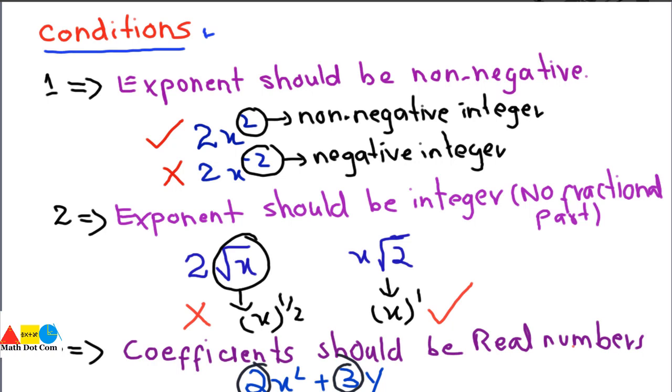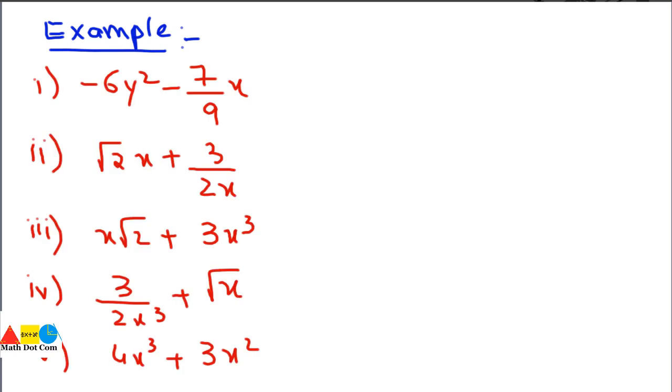If the coefficients are real numbers then it is a polynomial, but if any coefficient is an imaginary number then it is not a polynomial. Let's look at a few examples so you can identify whether a given algebraic expression is polynomial or not, checking each one by one.